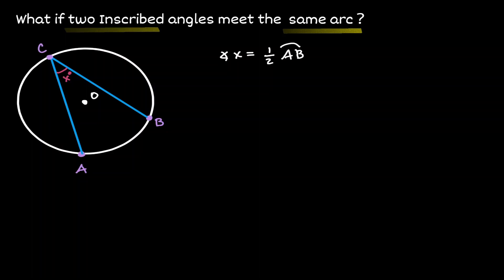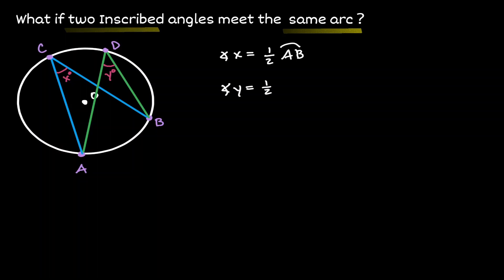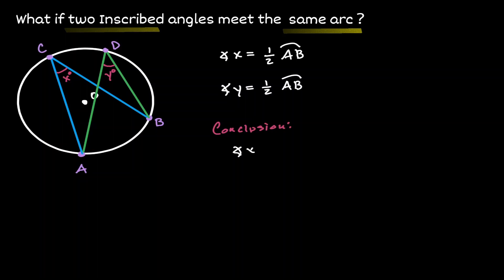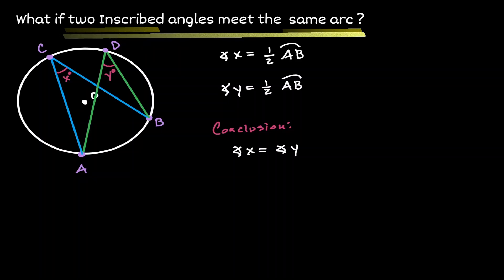Now let's draw another inscribed angle that also intersects at arc AB, and let's call this angle Y. Remembering the property of inscribed angles, angle Y is equivalent to one half of arc AB. Notice that angle X and angle Y are both equal to one half of arc AB, so we can say that those two angles are congruent to each other. If two inscribed angles intersect the same arc, those two inscribed angles will be congruent to each other.